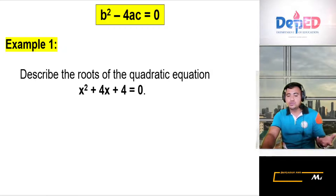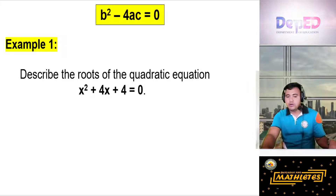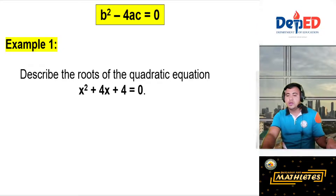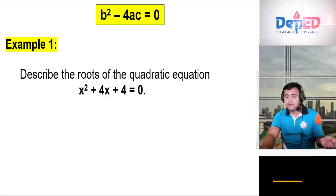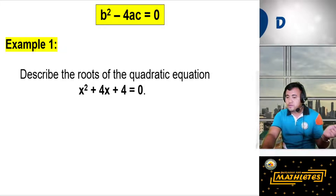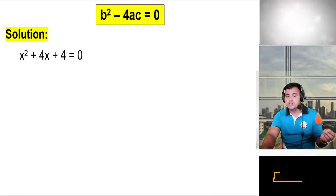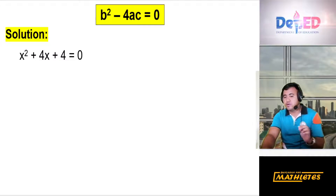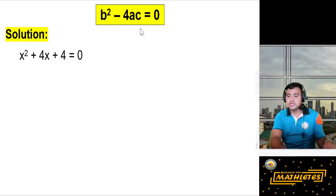Let's describe the roots of the quadratic equation x² + 4x + 4 = 0. There is no need to fully solve the equation; we only need to find the discriminant. We will solve for the value of b² − 4ac. Our equation is already in standard form.